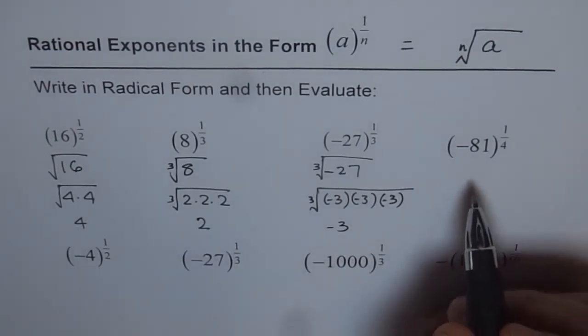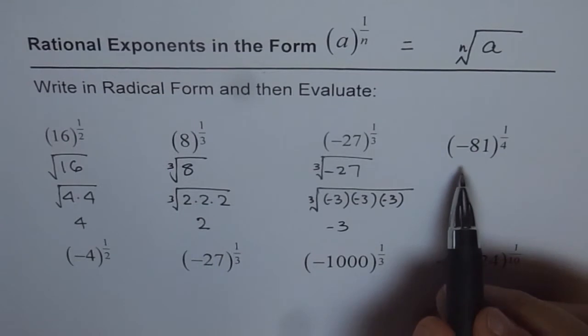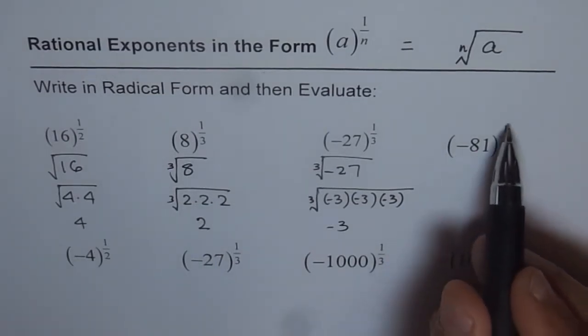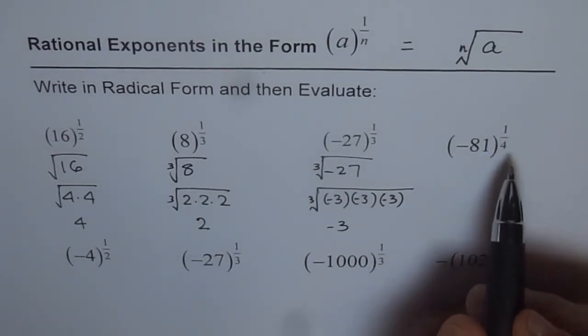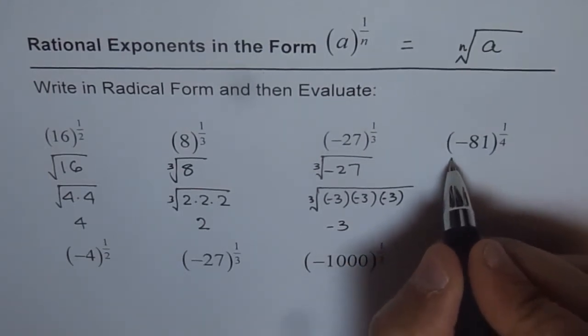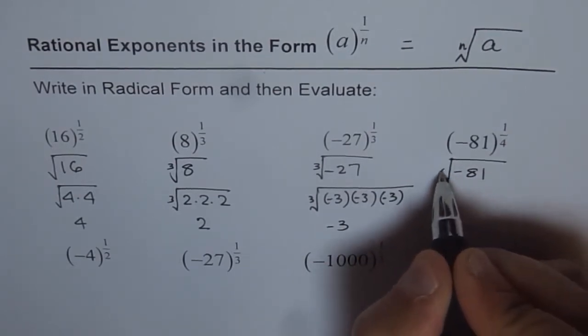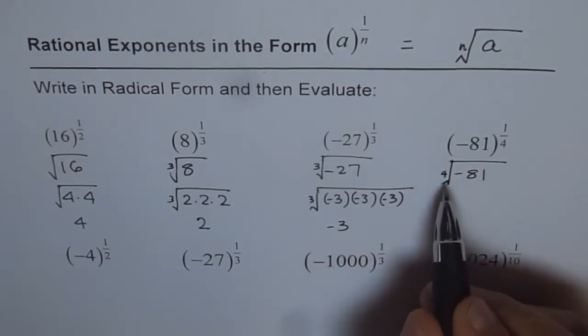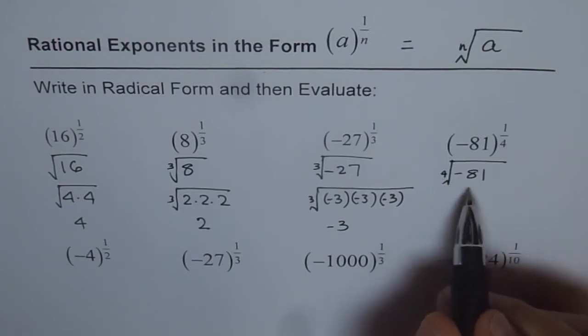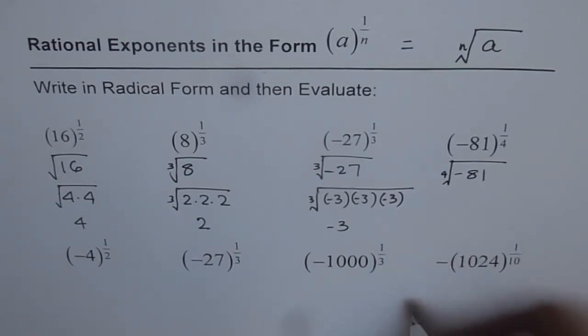Now, let's look at the fourth one, which is minus 81 to the power of 1 over 4. You will note here that this is fourth power. Let me first write this in radical form, that is minus 81 and write 4 here, small 4. That means 1 over 4 or the fourth root of minus 81.